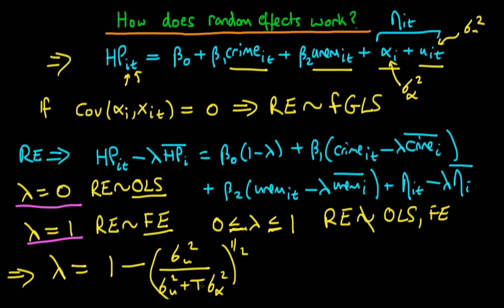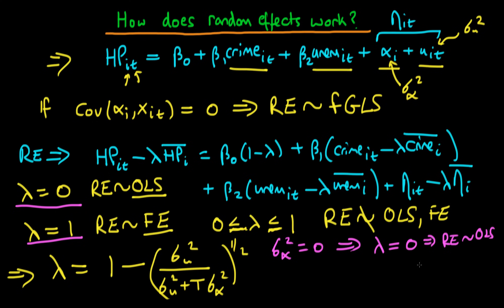How could we get lambda equal to zero? If sigma_alpha squared were removed from the denominator, we'd be left with sigma_mu squared divided by sigma_mu squared, which is one, and taking the square root gives one, so one minus one equals zero. Therefore, if sigma_alpha squared equals zero, lambda equals zero, and random effects is equivalent to pooled OLS. This shouldn't surprise us: it essentially means the effect alpha_i is unimportant, so we can forget about it and just estimate via OLS without worrying about serially correlated errors.